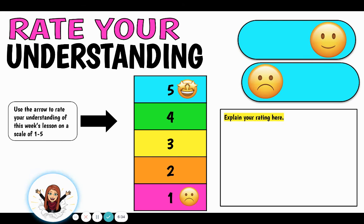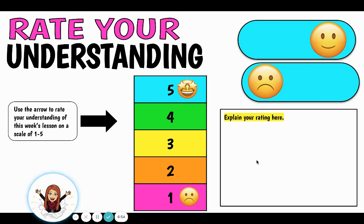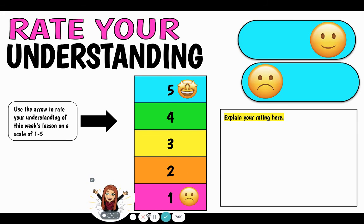Finally, you're going to rate your understanding. I want to know how confident you are feeling with being able to write your R sentence and your A sentence in a paragraph. You'll take this arrow and click and drag it — five being 'yes, got it, I'm an all-star at this,' or one being 'nope, I need more help,' or maybe somewhere in between. Then you'll explain the rating you've selected. This will help me know whether we need to continue practicing these two sentences or if we're ready to move on to the next piece. If you have any questions or need help, don't hesitate to send me an email. Good luck.